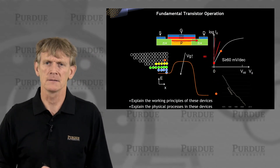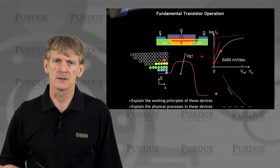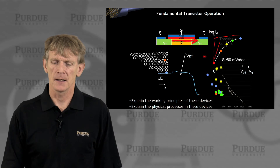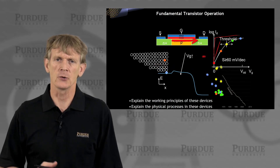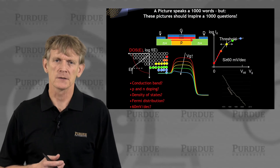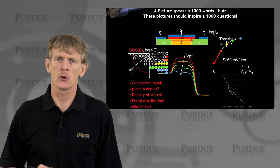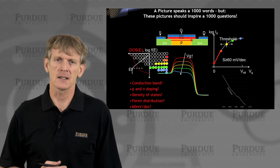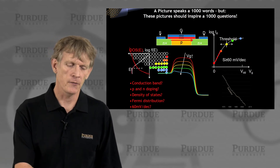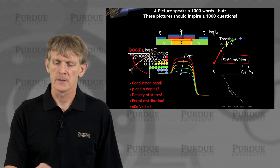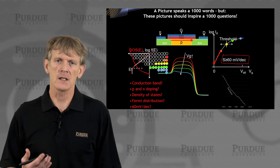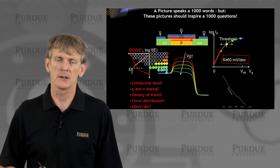The ideal switch, you would like it to turn on with little voltage and immediately saturate. You turn it on harder and reach a threshold. We will be discussing what the threshold is in a MOS device, what that means for a channel, and how to form a channel. The conduction band, P and N doping, density of states, and the Fermi function — which ultimately translates into the sub-threshold swing of 60 millivolts per decade — all start to make sense from what we've covered.